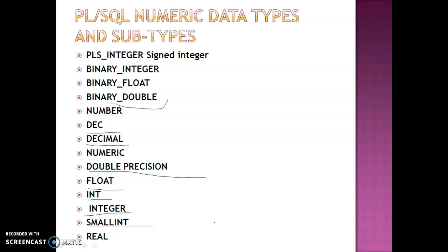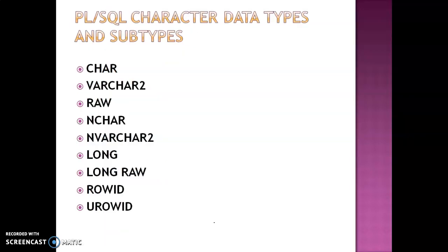Those are all the types of numeric data type. For character data types and their subtypes: CHAR is a fixed-length character string with a maximum size of 32,767 bytes. RAW stores variable-length binary or byte strings with a maximum size of 32,767 bytes. NCHAR stores fixed-length national characters with a maximum size of 32,767 bytes.